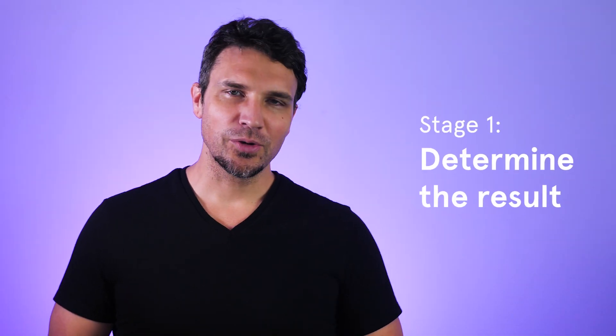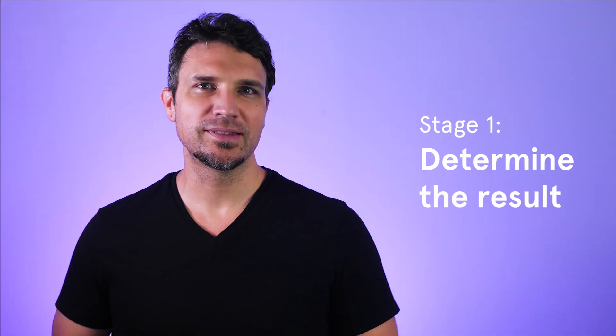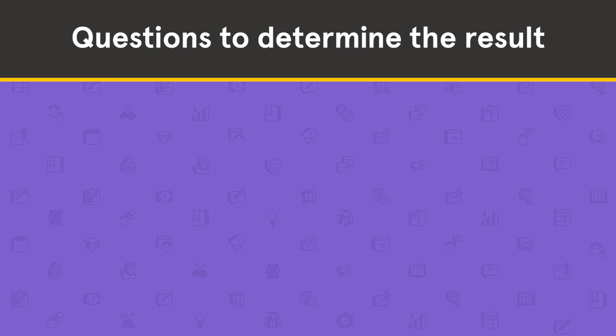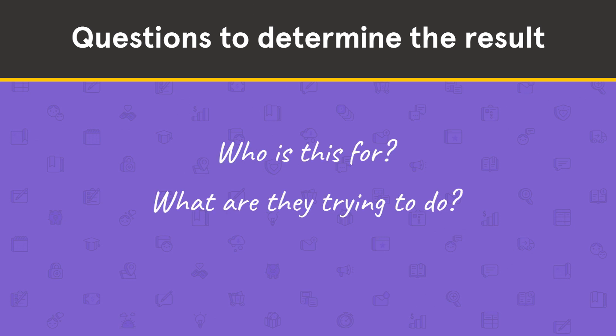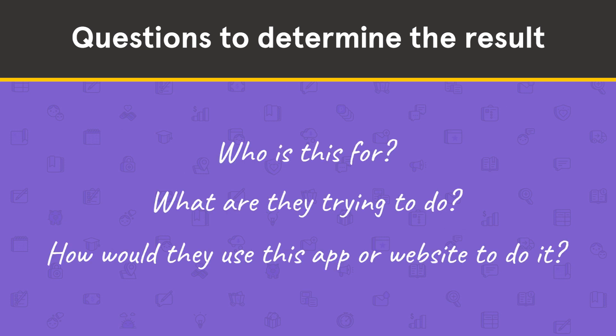Stage 1: Determine the result. This is the most important step when it comes to honoring our viewers' time and attention because it helps us define what we will and won't feature in our tutorial based on what our viewer needs. For this stage, answer these three questions: Who is this for? What are they trying to do? How would they use this app or website to do it? When you know the answers to these questions, it makes it easier to decide which features you'll focus on, which ones you'll ignore, and how specific you'll need to be in your instructions.